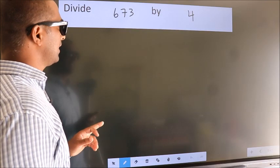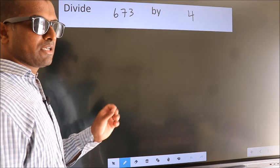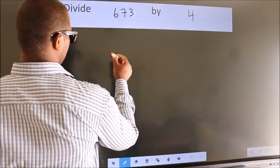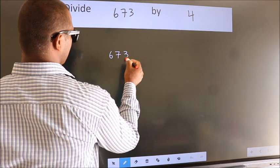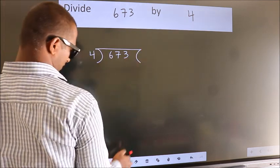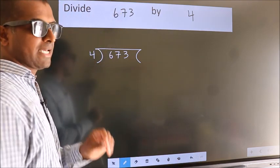Divide 673 by 4. To do this division, we should frame it in this way: 673 here, 4 here. This is your step 1.